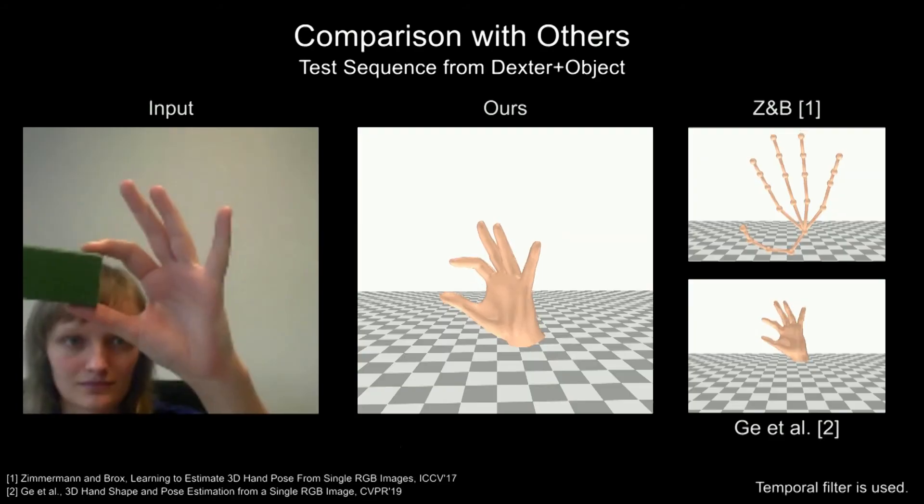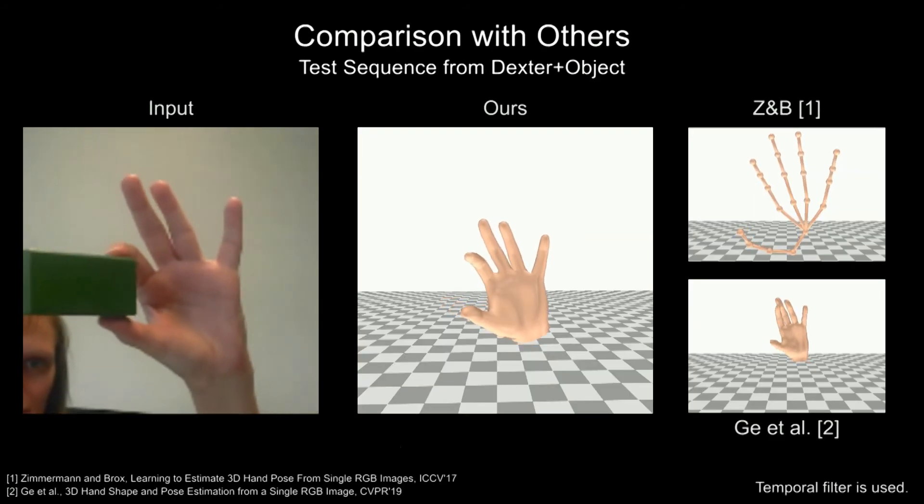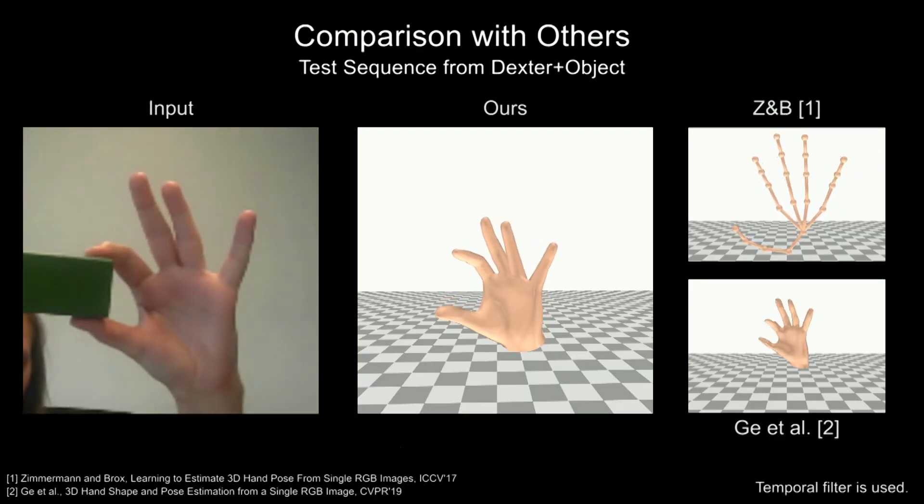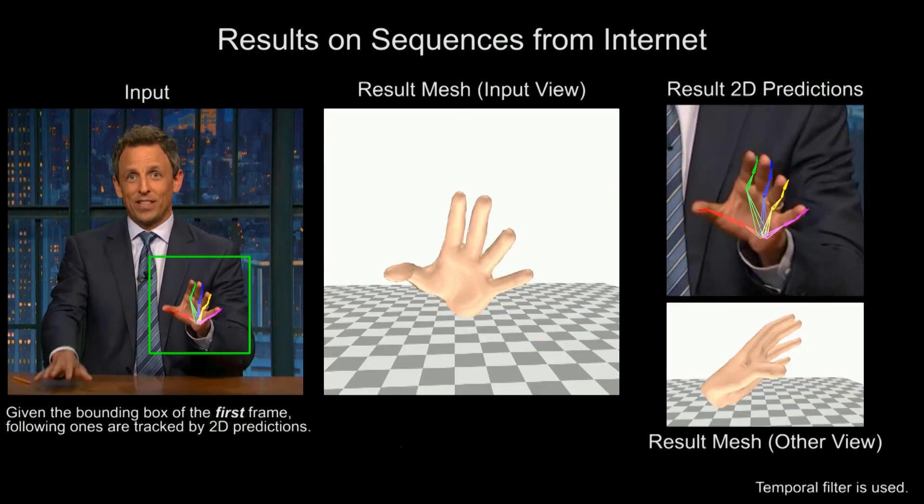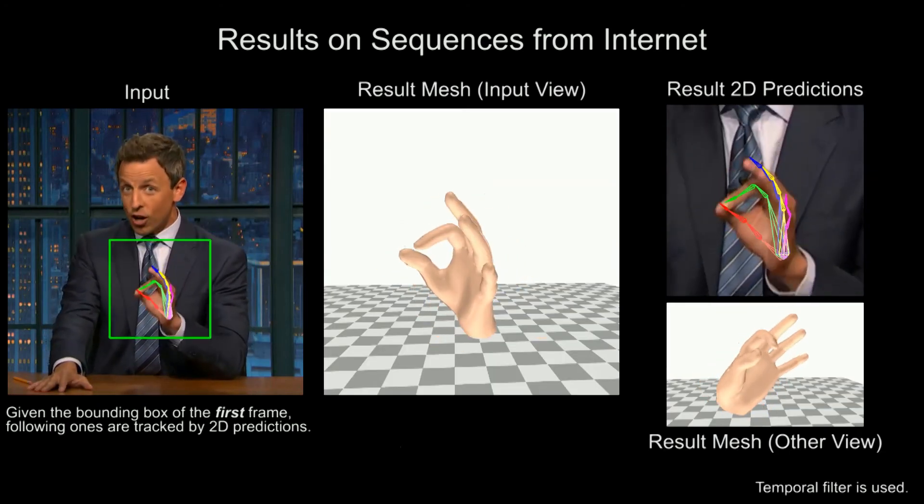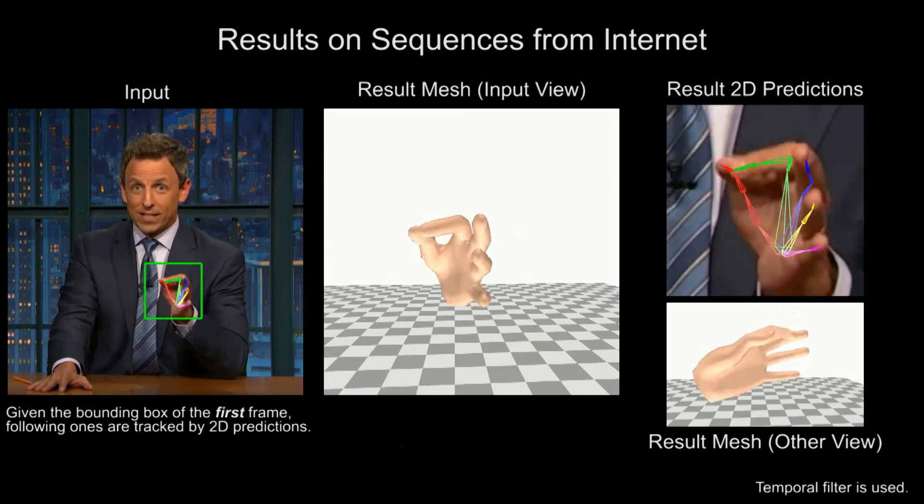Our approach demonstrates better performance compared with previous state-of-the-art works. Our model can also be applied to community videos. Given the bounding box of the first frame, the model tracks the hand automatically and estimates the joint angles.